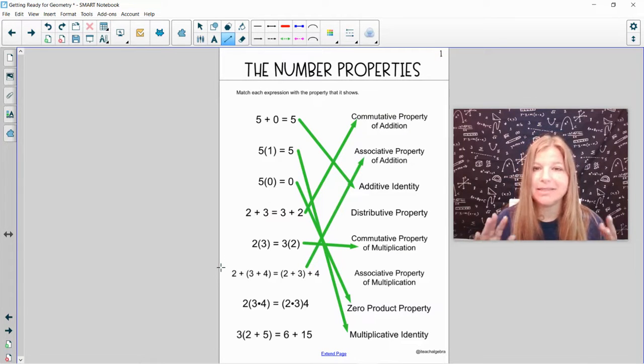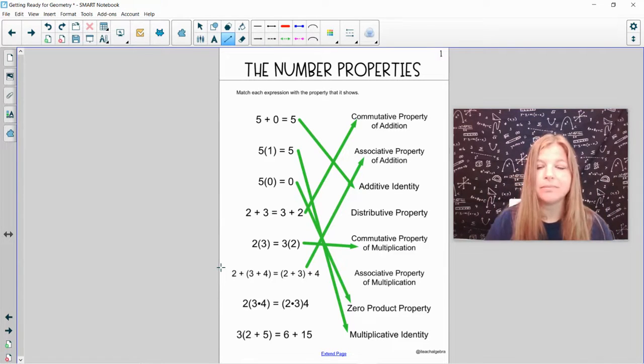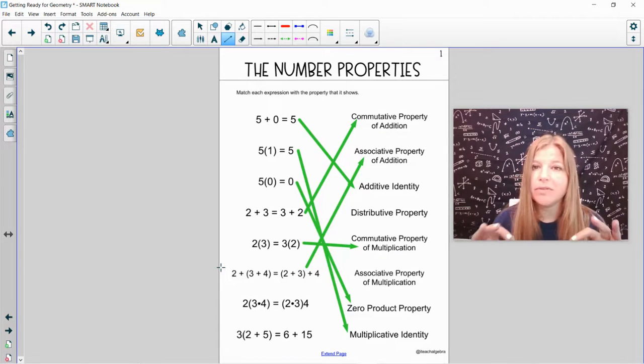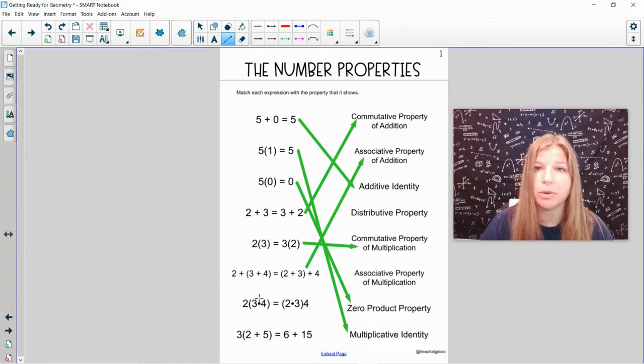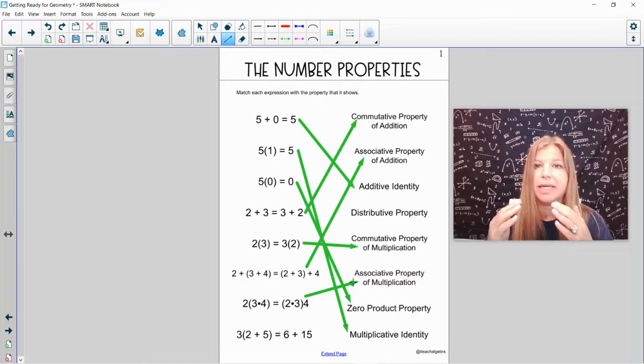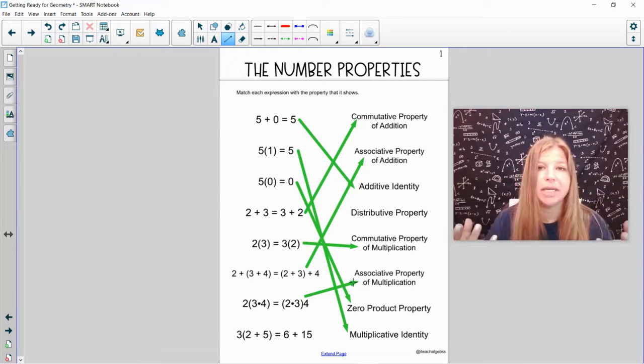The next one, same idea. They're all being multiplied. 2 times 3 times 4 equals 2 times 3 times 4. So the order of the numbers did not change. And honestly, you get the exact same result. Look at this. 3 times 4 is 12. 2 times 12 is 24. Well, 2 times 3 is 6. And 6 times 4 is also 24. That is your associative property of multiplication. It doesn't matter which ones you group or multiply together first. Because it's multiplication, you're going to get the same answer in the end.